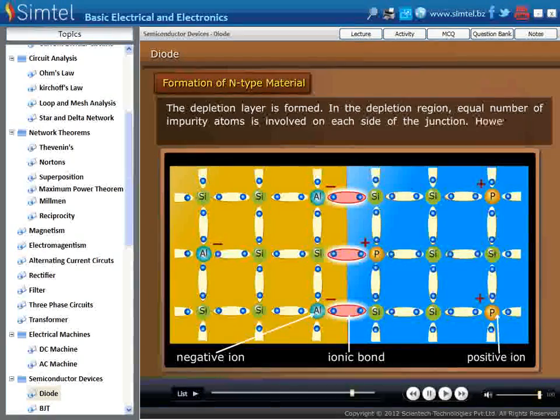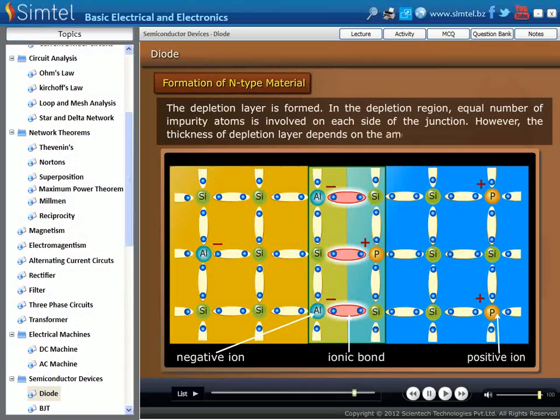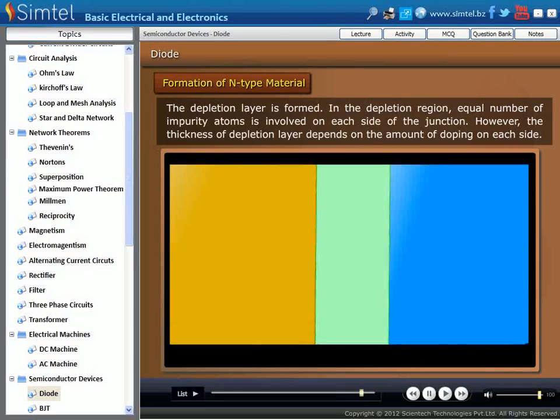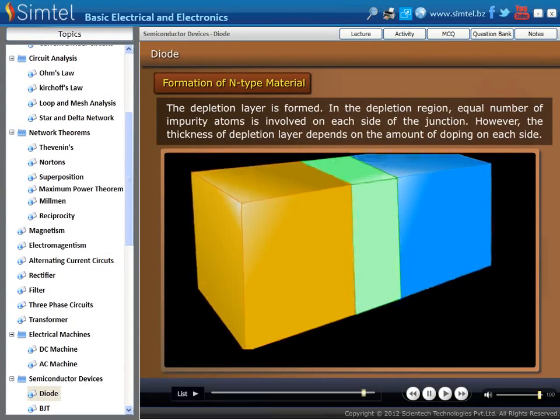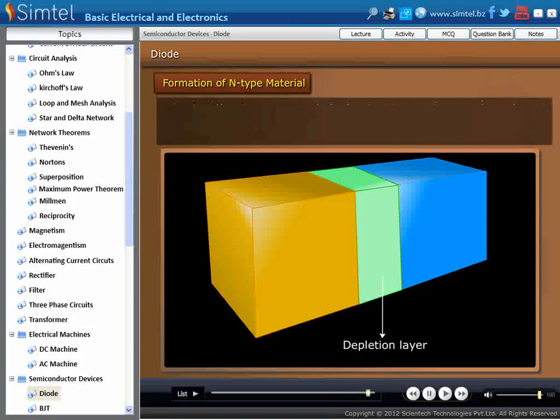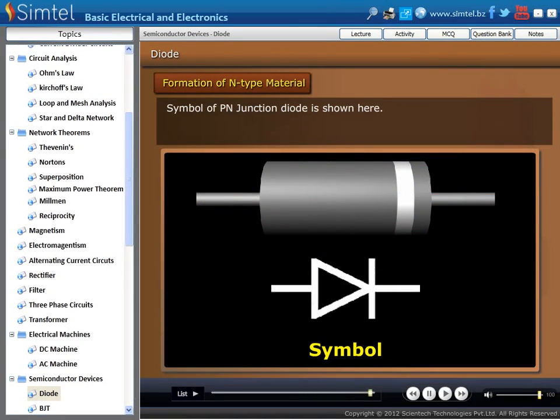In the depletion region, equal number of impurity atoms is involved on each side of the junction. However, the thickness of depletion layer depends on the amount of doping on each side. Here we are showing the symbol of P-N junction diode.